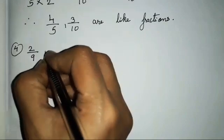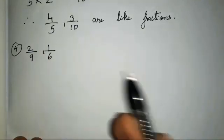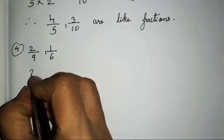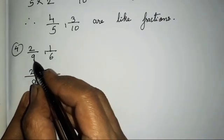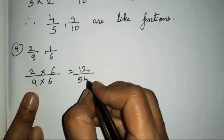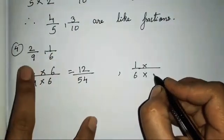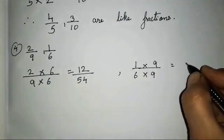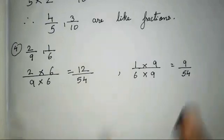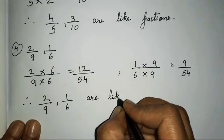The fourth sum is 2 upon 9 and 1 upon 6. In the 6s table 9 will not come and in the 9s table 6 will not come. So we use a very simple logic — multiply 9 with 6 and 6 with 9. For the first fraction, multiply with 6: 2 sixes are 12, 9 sixes are 54. For the second fraction, multiply with 9: 1 nine is 9 — wait, 6 nines are 54. Same denominator, therefore 2 upon 9 and 1 upon 6 are like fractions.